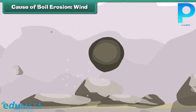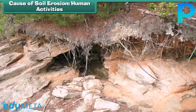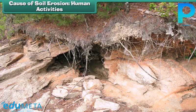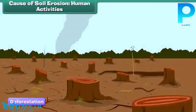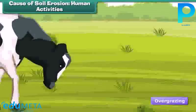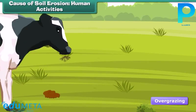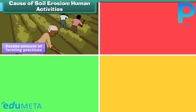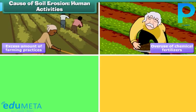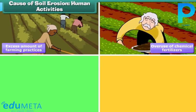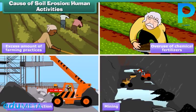Soil erosion is a naturally occurring process, but in many cases it is increased by human activities. Some of these include deforestation, overgrazing by animals, improper or excessive farming practices, trail building, overuse of chemical fertilizers, housing construction, and mining.